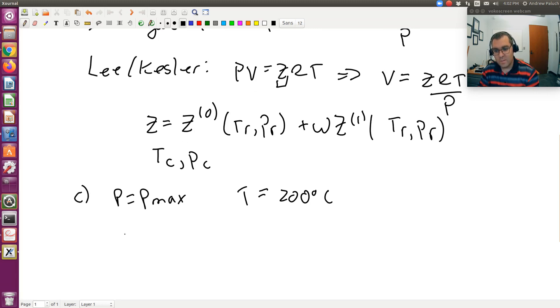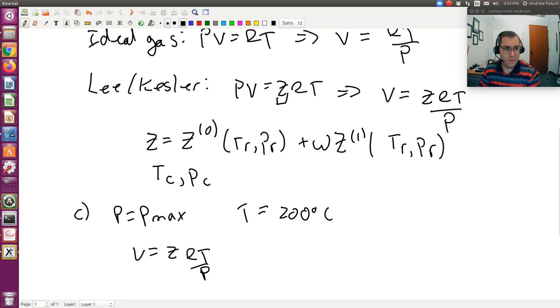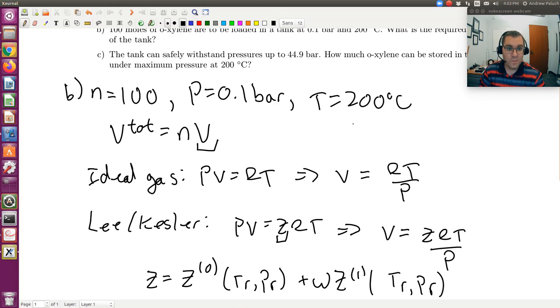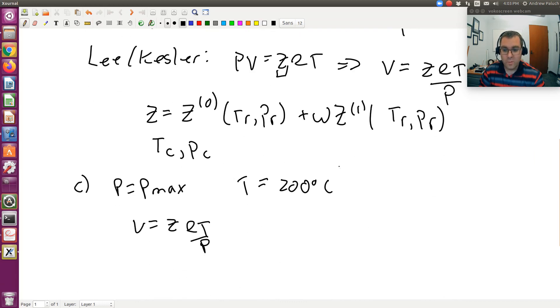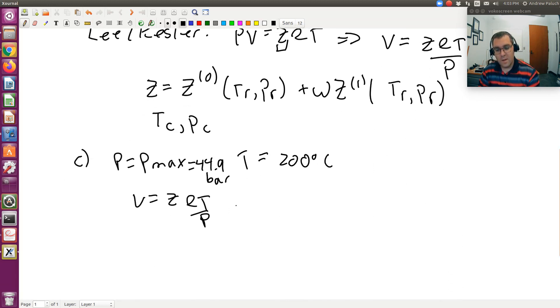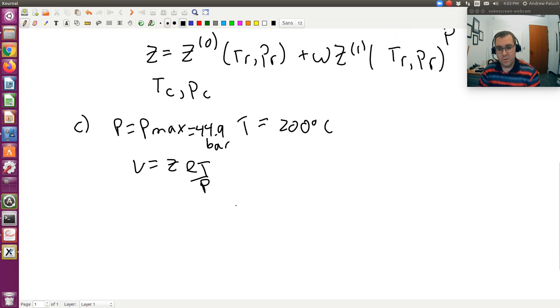V is going to be calculated from our equation of state for real fluids. Here we would definitely want to use the Lee Kessler table or an equation of state to calculate Z, because now pressure is over 40 bars, so now we're dealing with a pretty high pressure here, 44.9 bars. Ideal gas equation of state definitely won't apply. We'll use Lee Kessler to calculate Z. I know T and P. We know TC and PC.